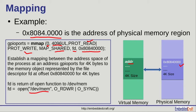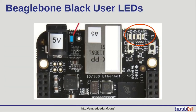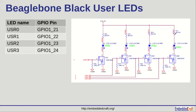The file descriptor fd is a handle to the physical memory, and it will be returned by the open function to the root /dev/mem device. BeagleBone Black has four user LEDs: user LED 0, user LED 1, user LED 2, and user LED 3. These LEDs are connected to GPIO pins. User LED 0 is connected to GPIO 1_21, user LED 1 to GPIO 1_22, user LED 2 to GPIO 1_23, and user LED 3 to GPIO 1_24.